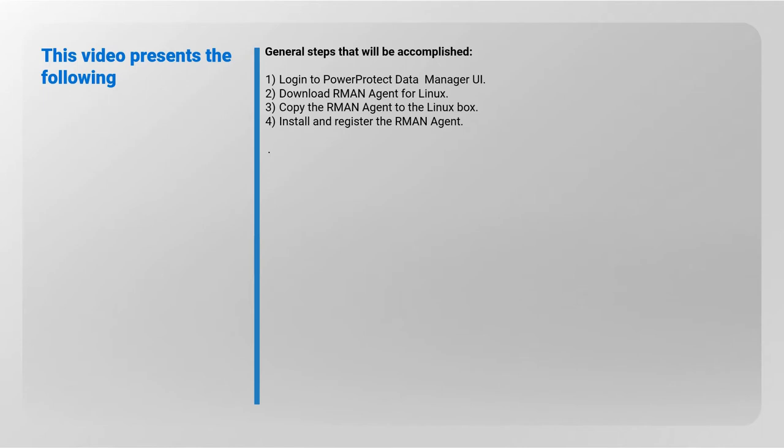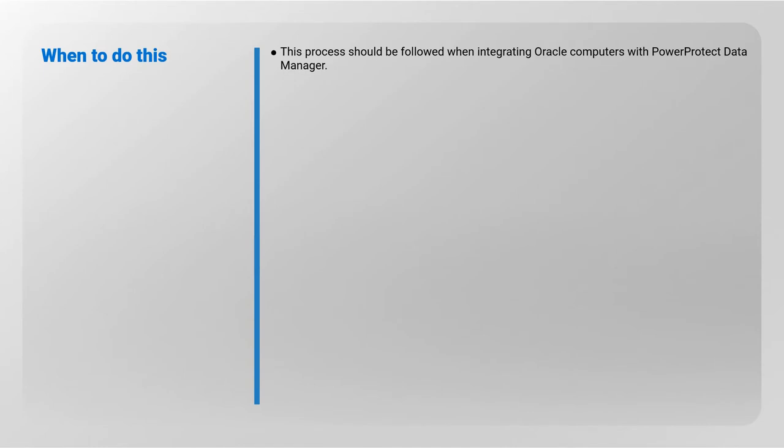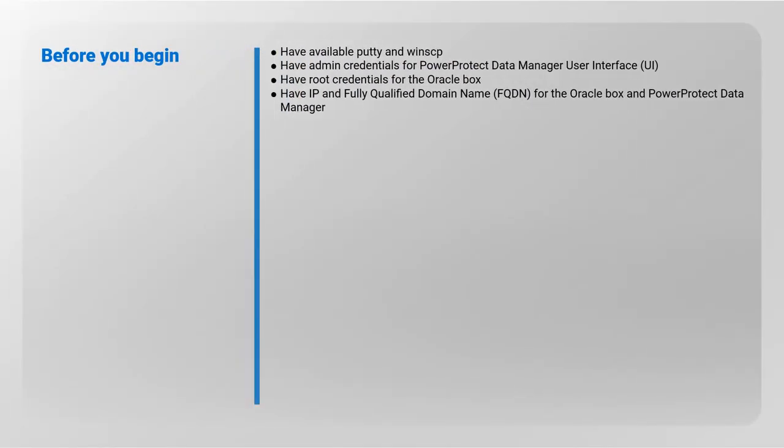General steps that will be accomplished: one, login to PowerProtect Data Manager user interface; two, download the RMAN agent for Linux; three, copy the RMAN agent to the Linux box; four, install and register the RMAN agent. This process should be followed when integrating computers running Oracle with PowerProtect Data Manager.